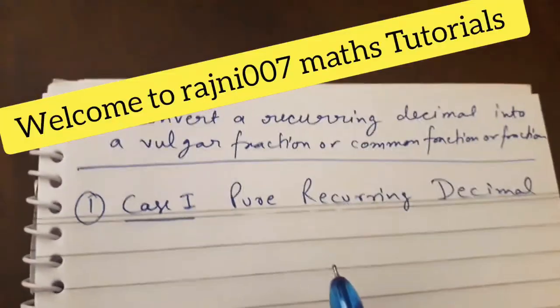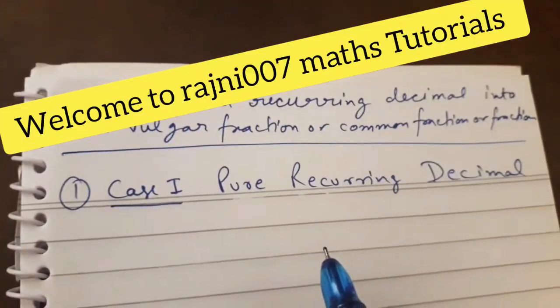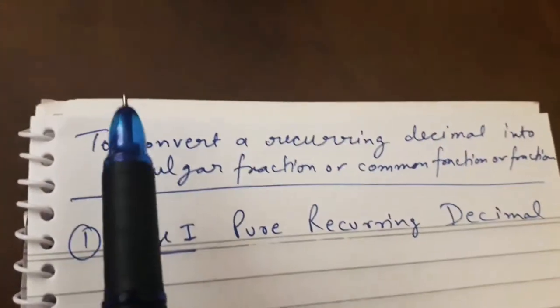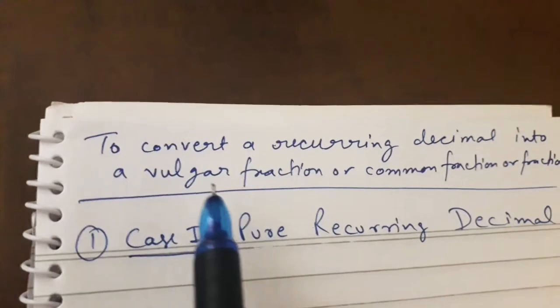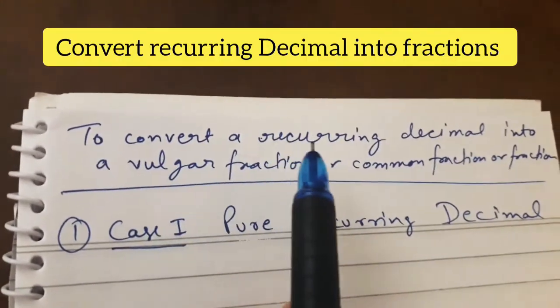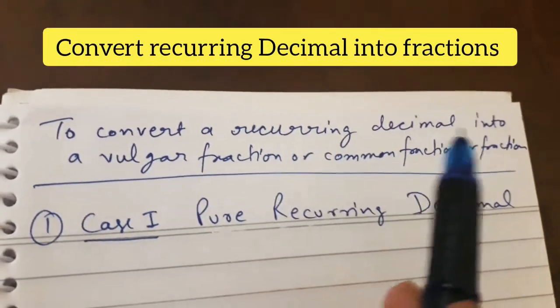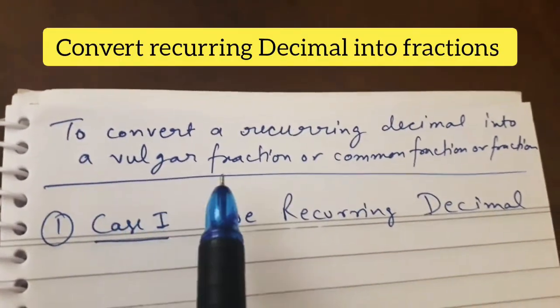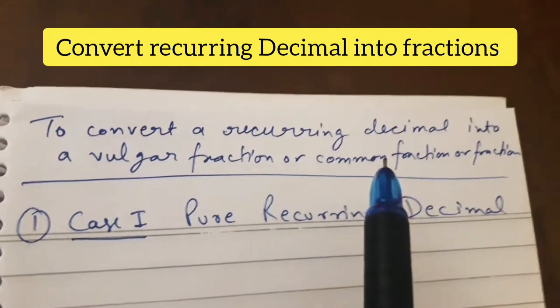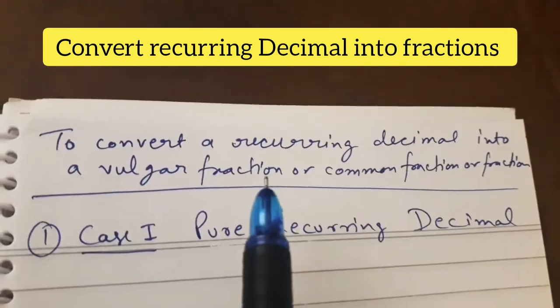Hello friends, welcome to DASNY 007 math tutorial. Today the topic is to convert a recurring decimal into a vulgar fraction, or common fraction, or a fraction.